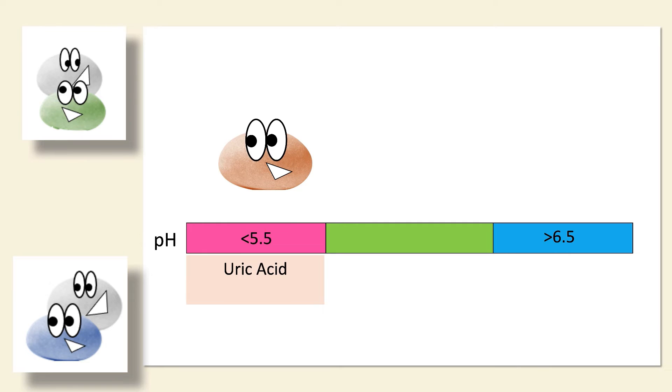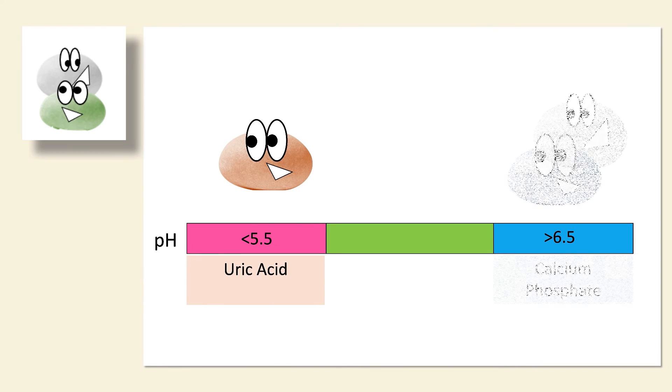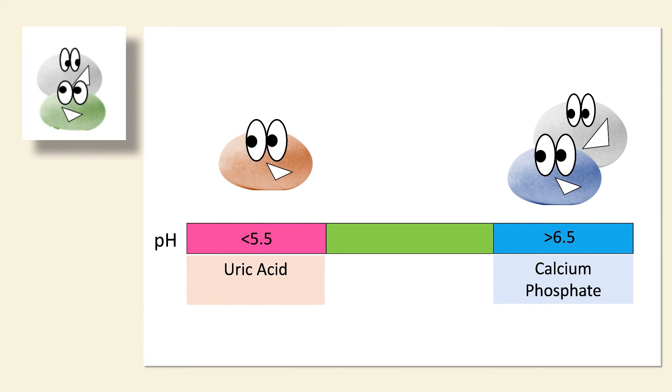And on the polar opposite of this pH line, in alkaline urine, there is one particular stone that is likely to appear. And that's calcium phosphate. So urine pH in the alkaline territory, sort of pH 7 or so, that's going to be quite risky for calcium phosphate stone formers.